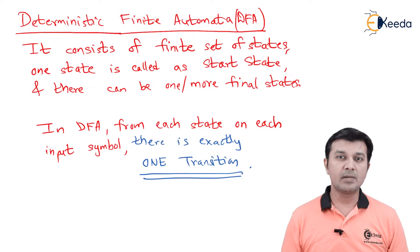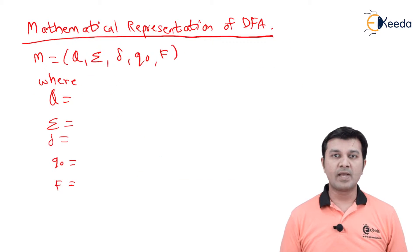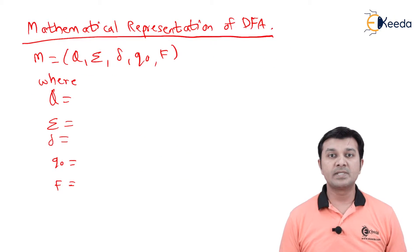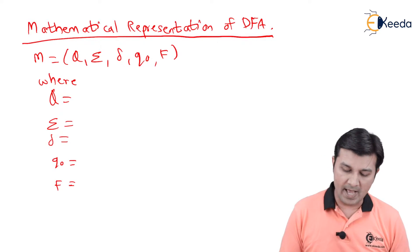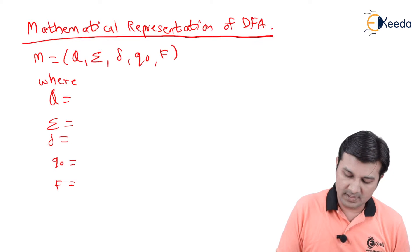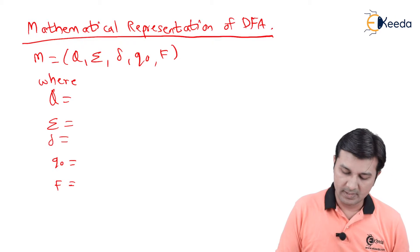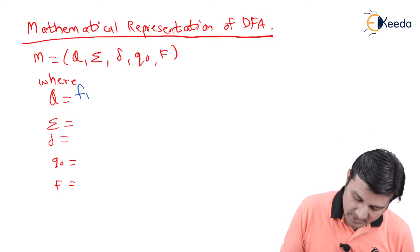You will immediately understand the difference between DFA and NFA when we jump to NFA. Now, the mathematical representation of Deterministic Finite Automata: DFA is mathematically represented as M = (Q, Σ, δ, Q0, F).